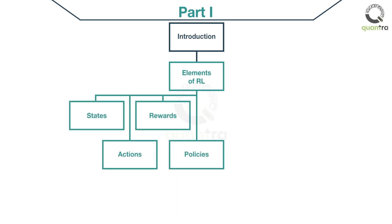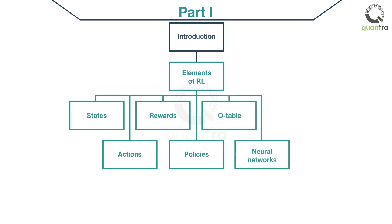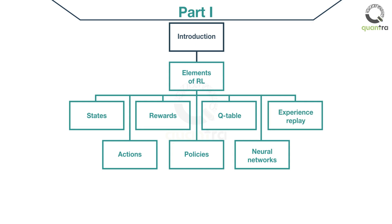We will go through the policies used by the RL model to decide how an action should be generated. We will further explore how the Q table is used to generate the Q values, which helps the neural network choose an action which maximizes the reward. Another major aspect of reinforcement learning is how the neural network is trained. We will see how experience replay plays a role in this part. Next, we will take a glance at the issues which should be accounted for while deploying a reinforcement learning model.